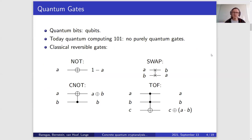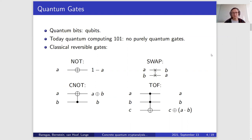These quantum circuits are built using quantum gates acting on quantum bits — qubits. Today we will not be talking about the quantum parts of Shor's algorithm; we will be talking about the reversible part, which means these gates are also part of classical reversible computing. We will be using four reversible gates. The first one is the NOT gate — hopefully you're familiar with that from classical computing, and it works the same here. It's reversible because if you repeat the NOT gate, you get a back.